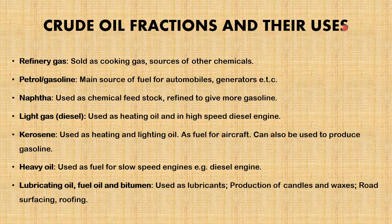Now let's explore crude oil fractions and their uses. At the top of the list we have refinery gas, which is sold as cooking gas or as a source of other chemicals. Petrol or gasoline is the main source of fuel for automobiles and generators. Naphtha is used as a chemical feedstock and can also be refined to give more gasoline. Light gas oil, also known as diesel, is used as heating oil and in high-speed diesel engines.